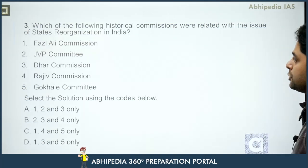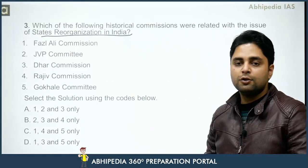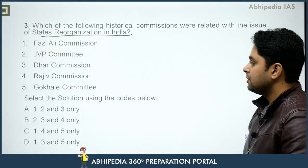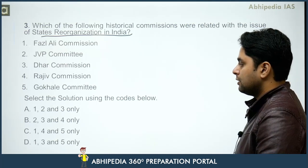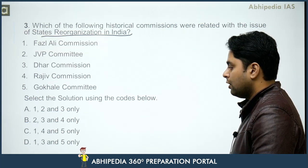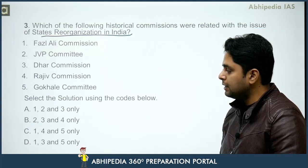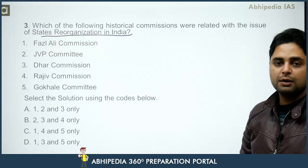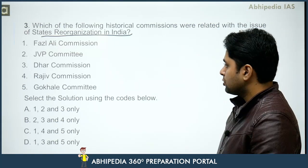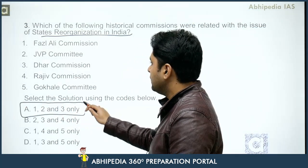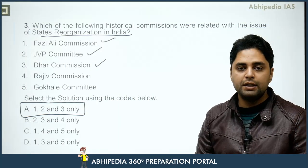Third question: which of the following historical commissions were related to the issue of states reorganization in India? Fazlali Commission, JVP Committee, Dhar Commission, Rajiv Commission, or Gokhale Committee - select the correct codes. Looking at the options, each has three choices, so two are definitely wrong. The correct answer is 1, 2 and 3: the Fazlali Commission, the JVP Committee, and the Dhar Commission. Yeh 3 commissions thi jo states reorganization ke liye constitute ki gai thi from time to time.